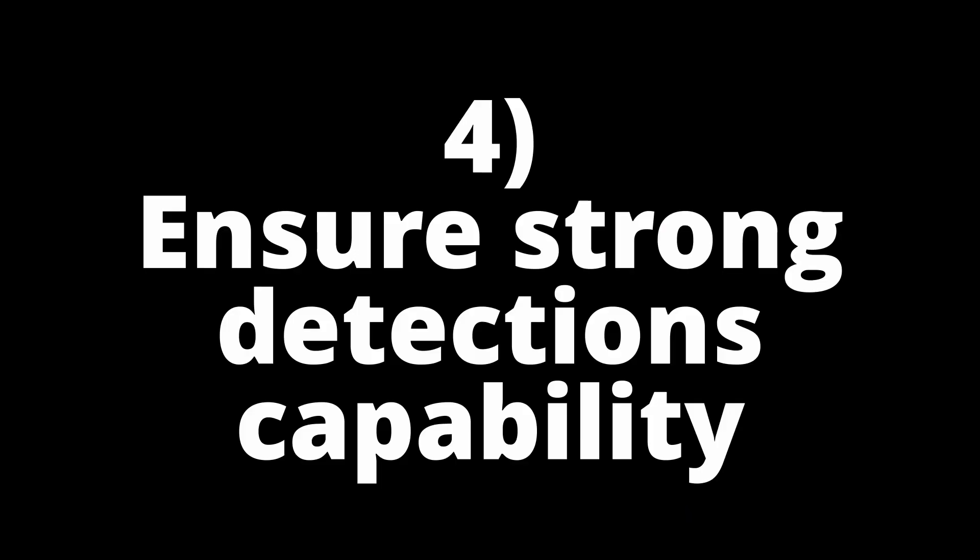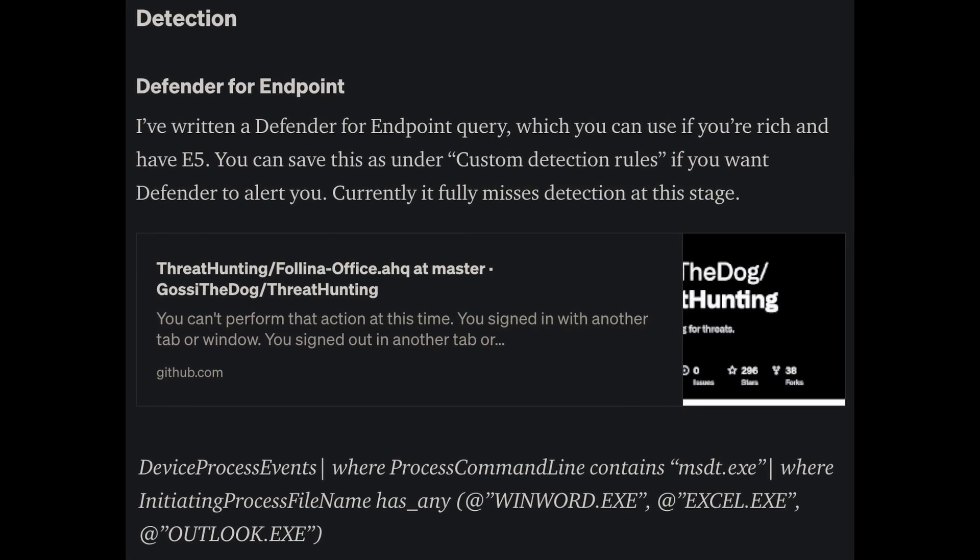Third, if possible, disable MSDT — this might break applications or services that rely on it, so weigh the cost-benefit of leaving it enabled. Fourth, put proper behavioral detections in place so that even if the exploit detonates you can catch it on the back end. For example, if you notice a remote connection being made from a host to a suspicious IP address and Microsoft Word was launched prior to that connection, that should be flagged as suspicious.